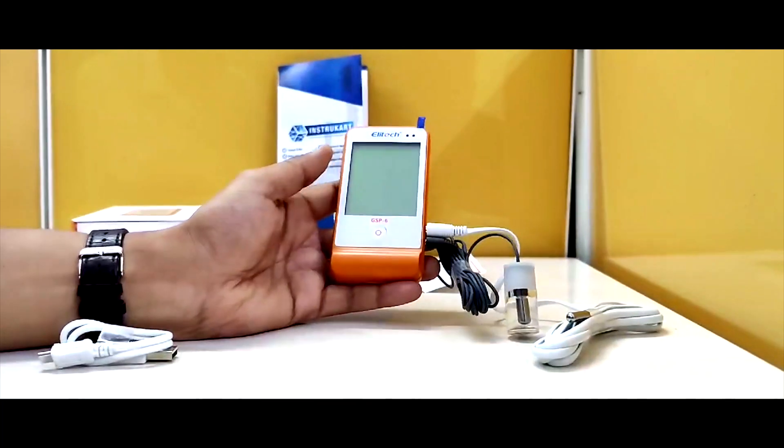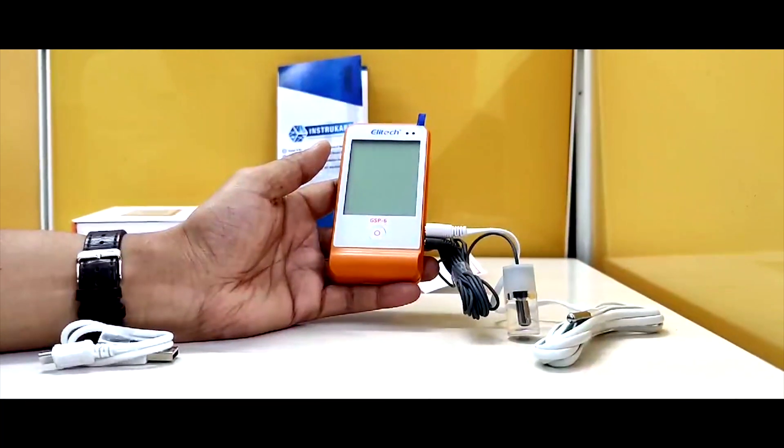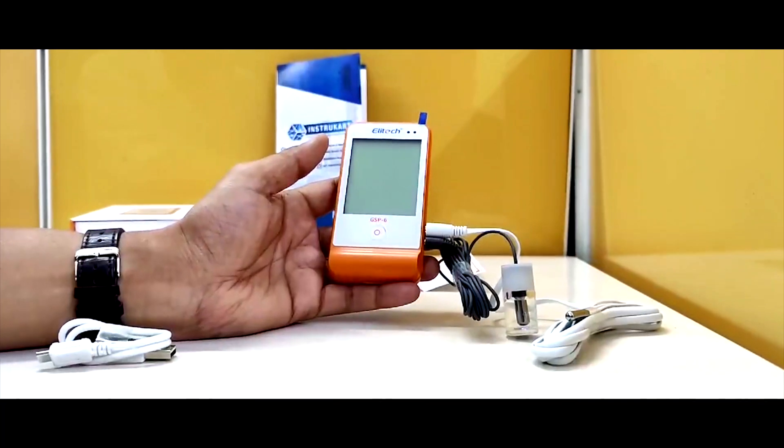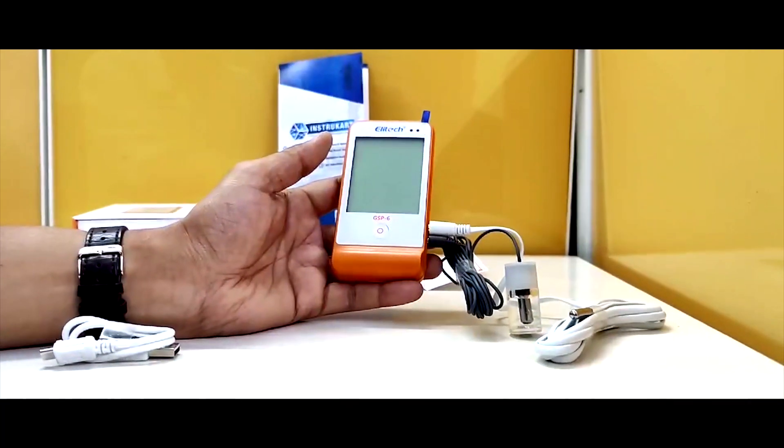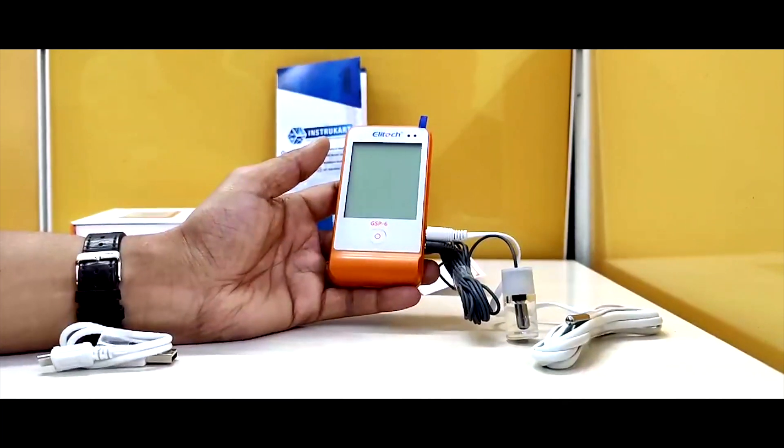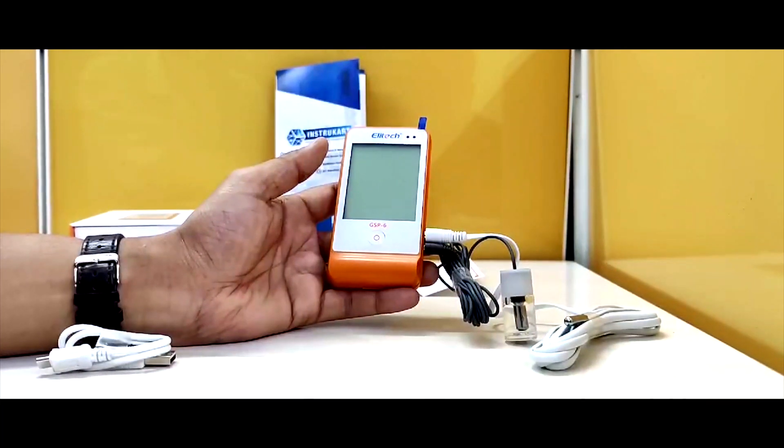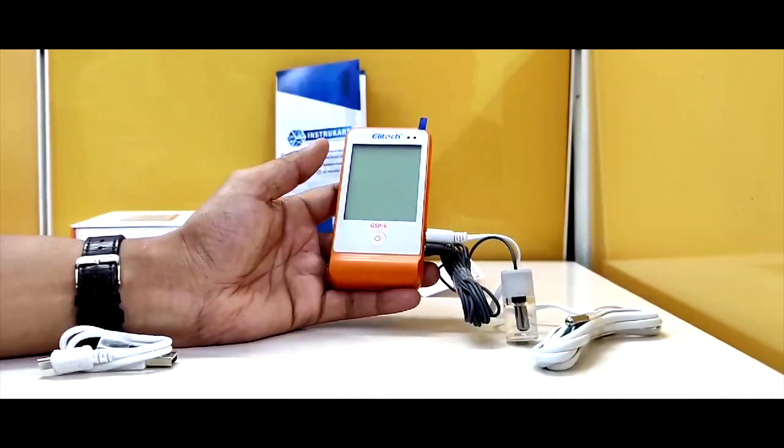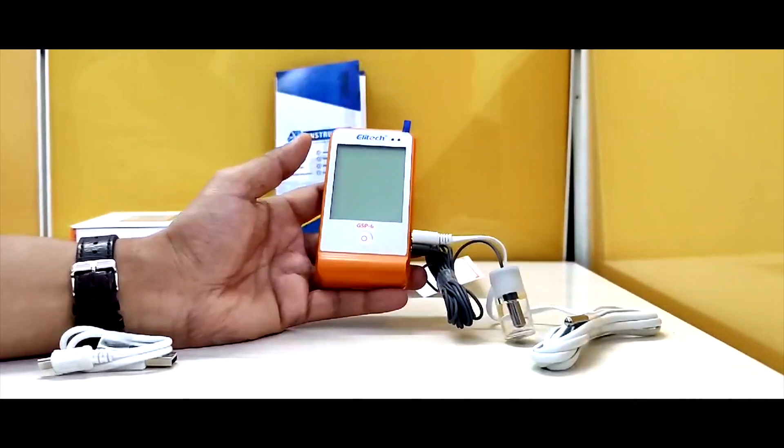With a temperature accuracy of plus or minus 0.5 degrees Celsius, and humidity range from 10 to 99 percent with a humidity accuracy of plus or minus 3 percent RH.